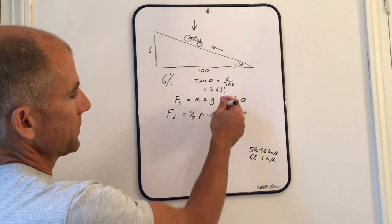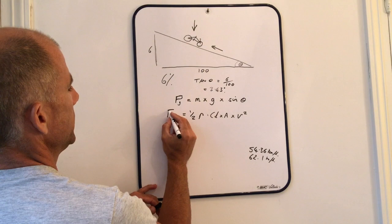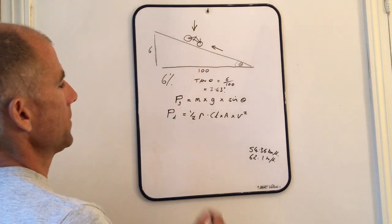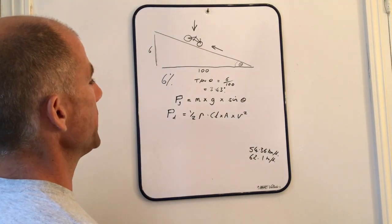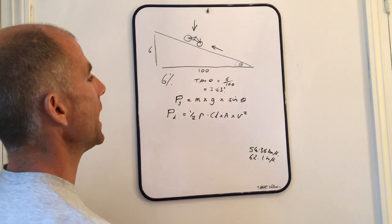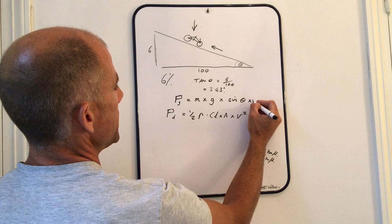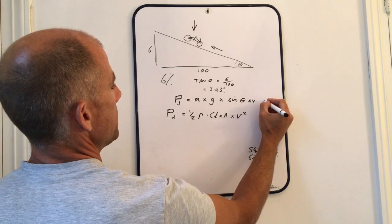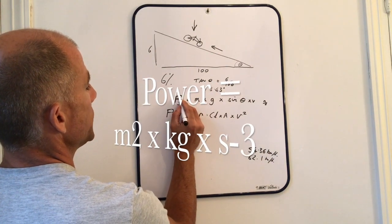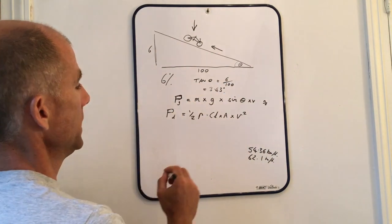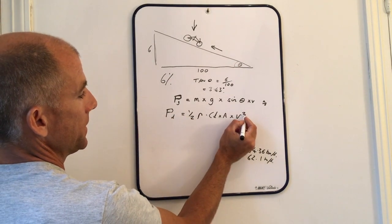To adjust these formulas for power, to turn this into a PG and a PD, basically power is a measure of the work being done over the amount of time it takes to do that work. So if we include the velocity here, that's meters per second, which then gives you a figure in joules per second, which is watts.